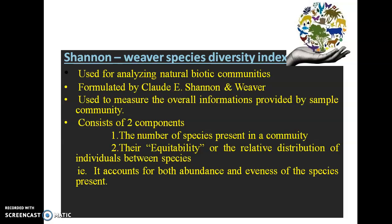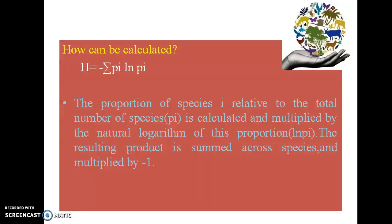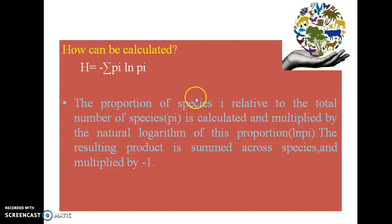It accounts for both abundance as well as the evenness of the species present. How can we calculate? It can be calculated by the following formula: H = -Σ pi × ln(pi), where pi is the proportion of species i relative to the total number of species. This proportion is multiplied by the natural logarithm of that proportion, ln(pi). The resulting product is summed across all species and multiplied by minus 1. This is the Shannon diversity index.